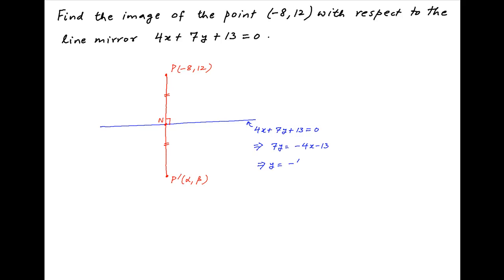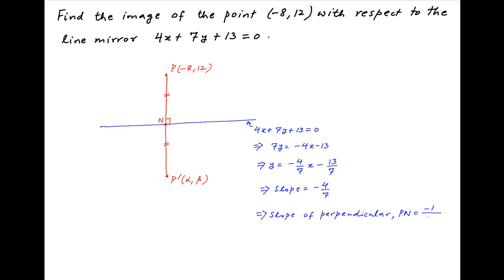The given equation of the line can be written as y = (-4/7)x - 13/7, which implies that the slope of the line is equal to -4/7. Therefore, the slope of the line which is perpendicular to this is equal to -1 / (-4/7), which is equal to 7/4. Therefore, the slope of line PP' is equal to 7/4.